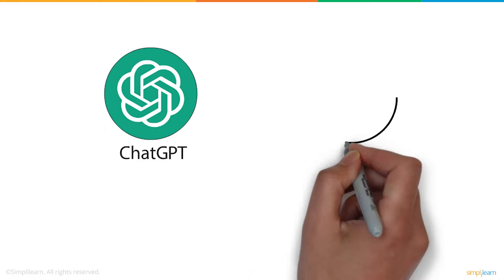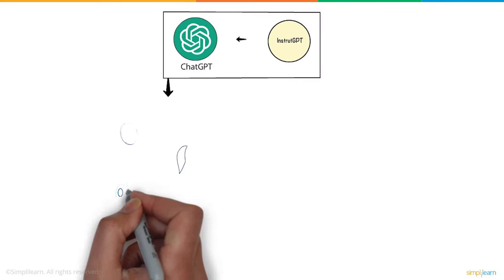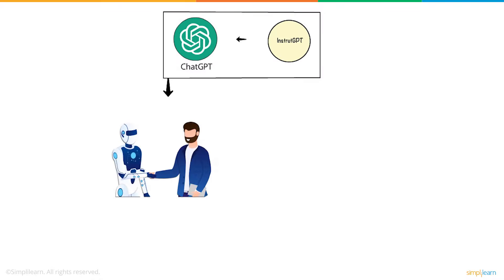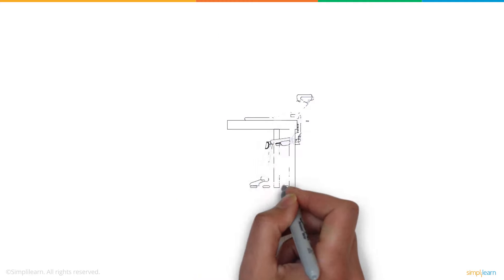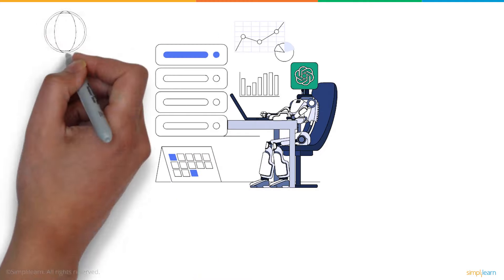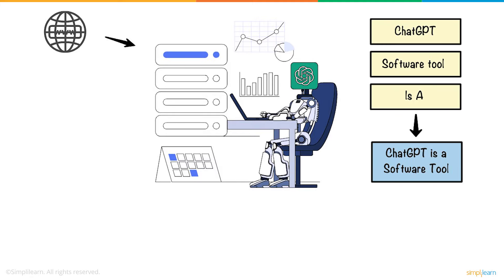ChatGPT is a byproduct of InstructGPT. InstructGPT introduced a strategy for integrating human feedback into the training process to match model outputs. This innovative technology made ChatGPT exceptional. It is trained on massive datasets of text from the internet and learns from the patterns and relationships between words and phrases.